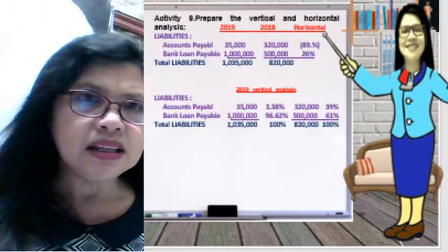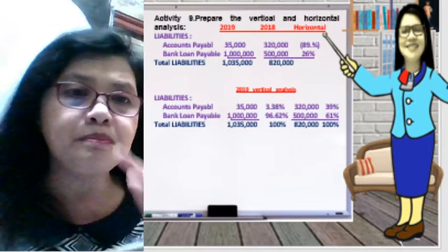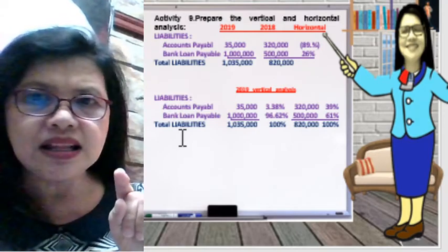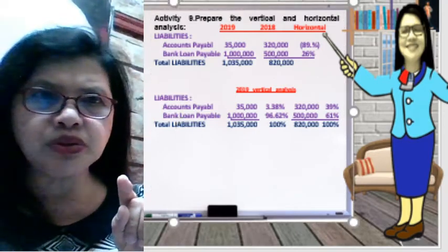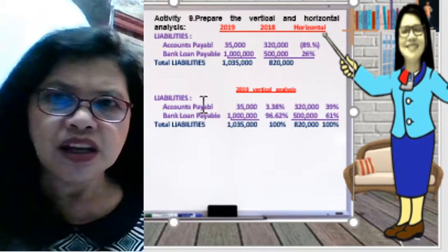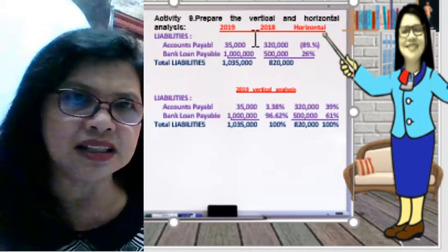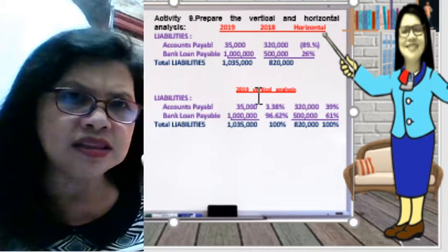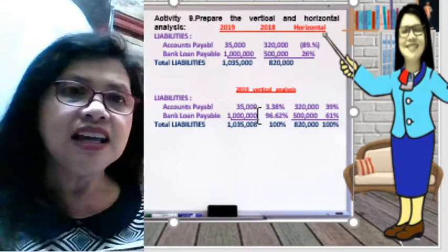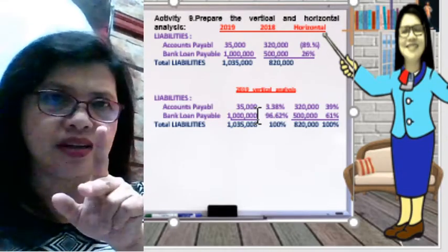Now let's go to the liabilities section. For liabilities, the base account is the total liabilities. Let's first do the horizontal analysis. Horizontal analysis is a comparison of at least two years. When we compare 2018 to 2019, the formula is the same.